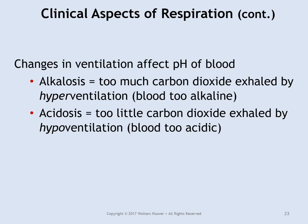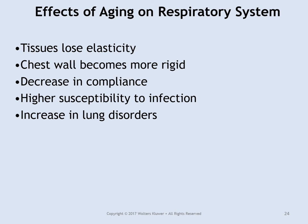Regarding blood pH: alkalosis occurs when too much carbon dioxide is exhaled, as happens when you hyperventilate. Acidosis occurs when not enough carbon dioxide is exhaled, caused by hypoventilation — breathing below 12 breaths per minute — and the blood becomes acidic.